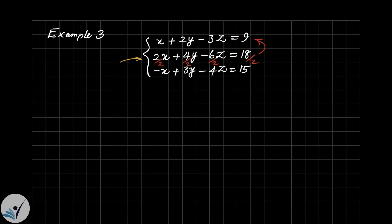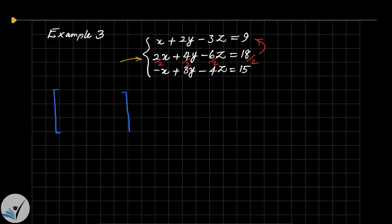Now that I know the answer, I'll solve using row reduction to confirm. I start by converting to matrix form — a three-by-four augmented matrix. The columns are: 1, 2, -1 on the first; 2, 4, 3 on the second; -3, -6, -4 on the third; and 9, 18, 15 on the last column. I need to transform this matrix to echelon form.